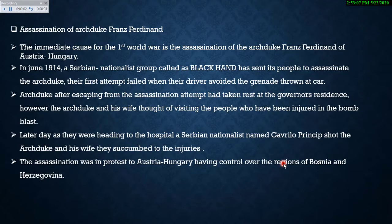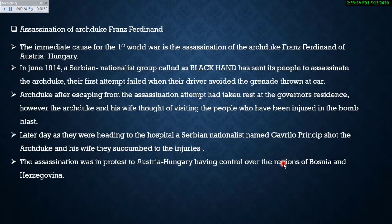First, we will look at the assassination of Archduke Franz Ferdinand. As discussed in the earlier video about the Balkan Wars, the independence of Serbia created tensions between Austria and Hungary, which ultimately led to the assassination of Archduke Franz Ferdinand. The immediate cause for the First World War is this assassination.